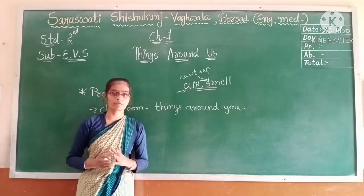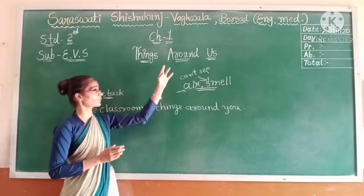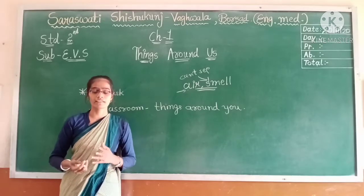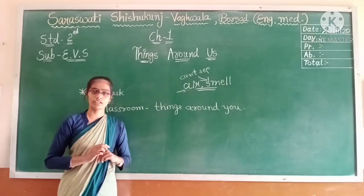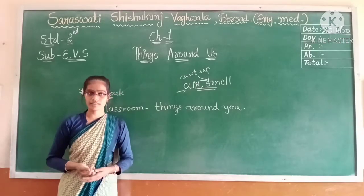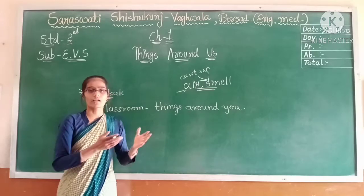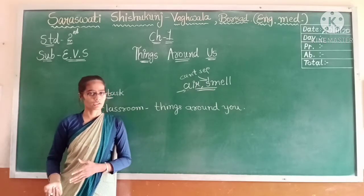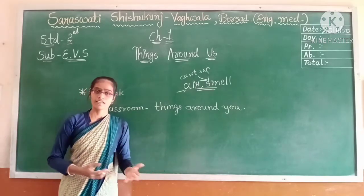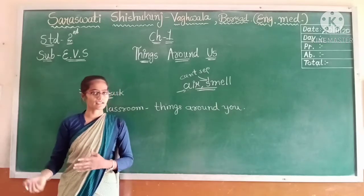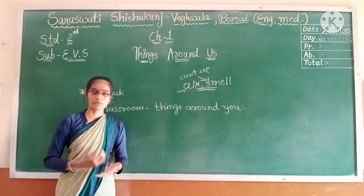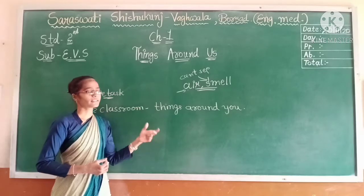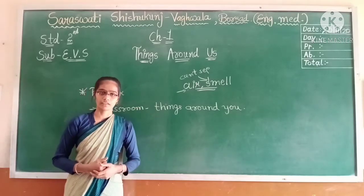I hope all of you understood the concept: 'things around us' means we are all surrounded by air, water, and all of these things. Some things are natural, some are man-made. Some things we can see, some things we can't see. Today we will learn about all these things in this chapter.